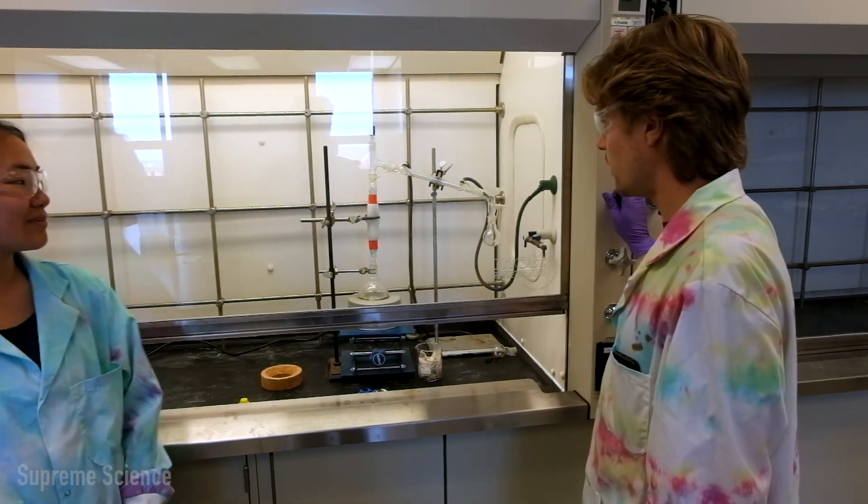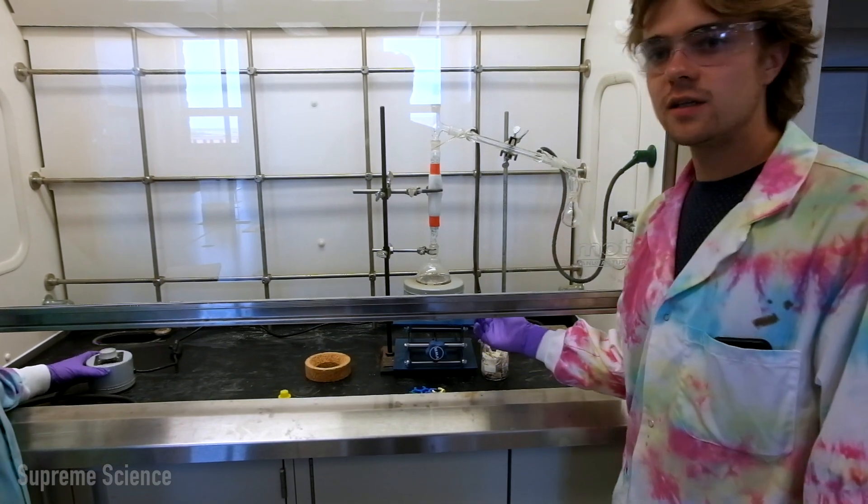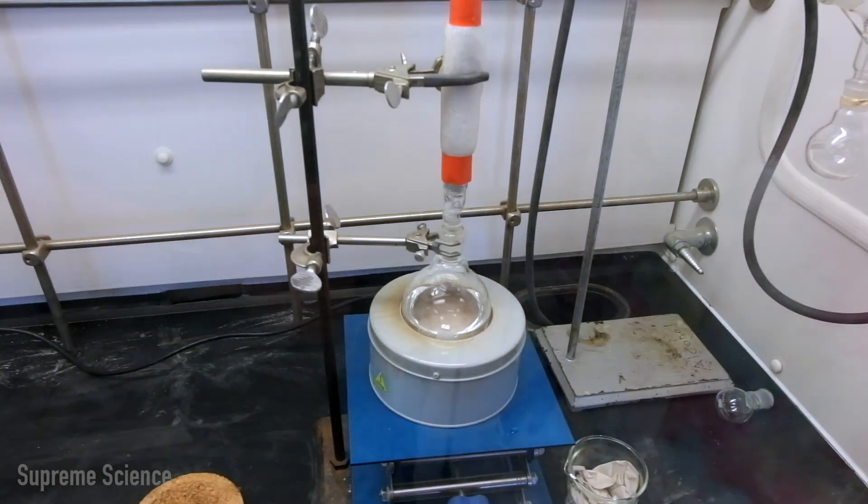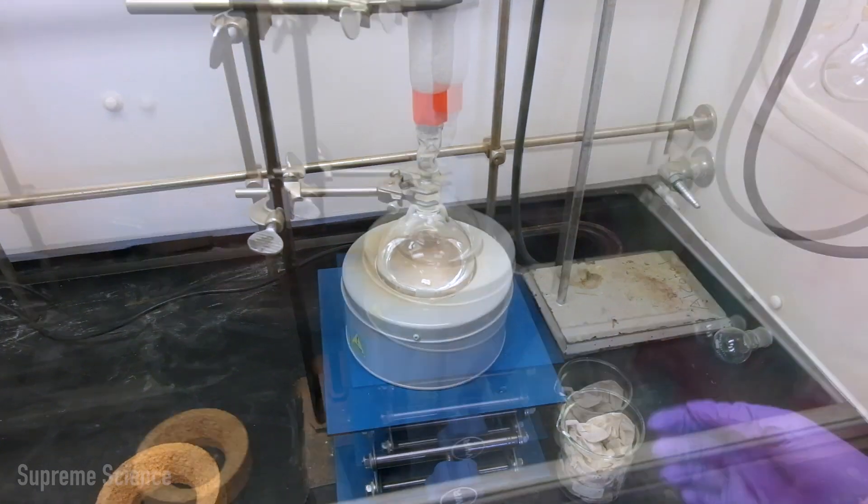Now that we have our setup how we want it, we can turn on the cold water. And we have a boiling chip in our flask to prevent bubbling over. And we are ready to start heating. So the heat is on, and we're going to let that heat for a little bit.